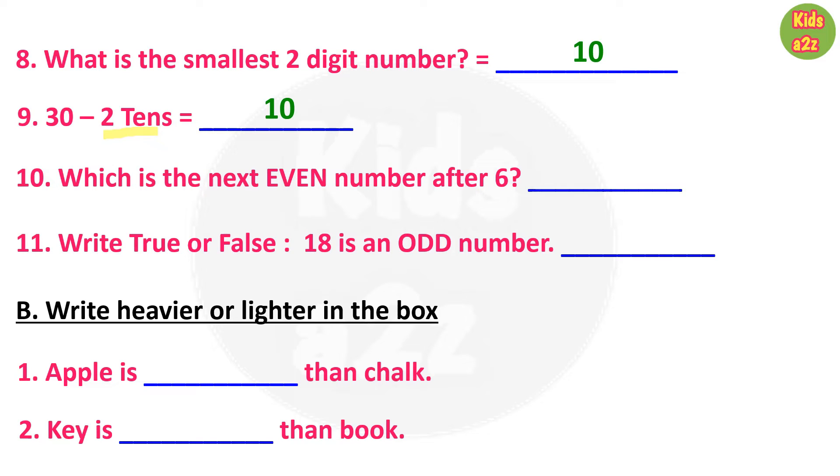Question 11: write true or false - 18 is an odd number. That is false. For the next question, kids need to write heavier or lighter in the blanks. First one: apple is dash than chalk. Answer is heavier. Number 2: key is dash than book. Answer is lighter.